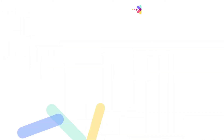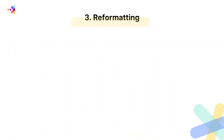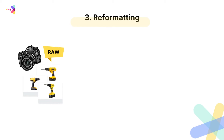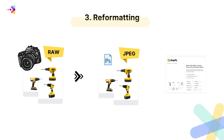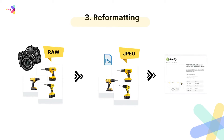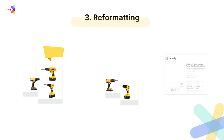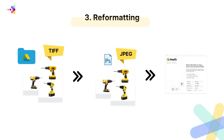And speaking of reformatting, many companies face reformatting issues. For example, maybe your camera captures raw photos and you have to upload in JPEG format, or perhaps you have to convert a TIFF to a JPEG.